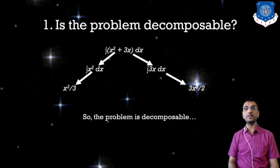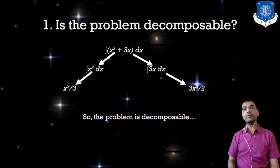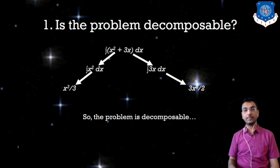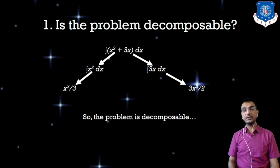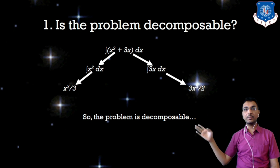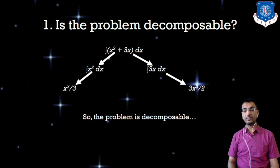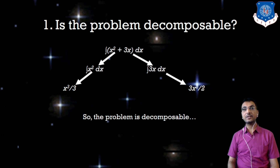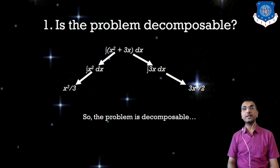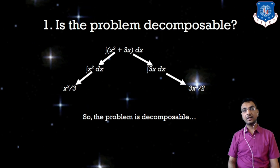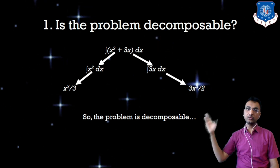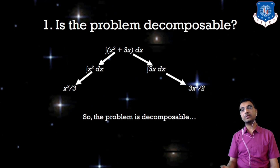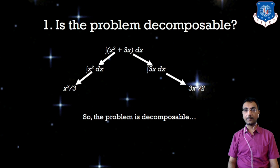The first characteristic is problem decomposability. We take the example of an integration problem. Integration is symmetric on the basis of the plus operation, so we divide the term into two parts: x² dx and 3x dx. x² dx equals x³/3 and 3x dx equals 3x²/2. This problem can be decomposed into two sub-problems because integration is symmetric on the basis of the addition operation.